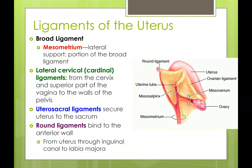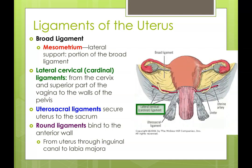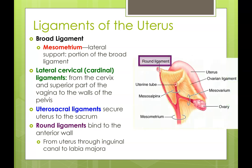To finish off the broad ligament portion, we have the mesometrium, which connects the uterus to the pelvic wall to give it lateral support. We also have the lateral cervical or cardinal ligament, attaching from the cervix to the superior portion of the vagina to the walls of the pelvis. We also have a uterosacral ligament attaching the uterus to the sacrum. Lastly, we have the round ligament, which connects the uterus to the anterior pelvic wall and travels through the inguinal canal to the labia majora.